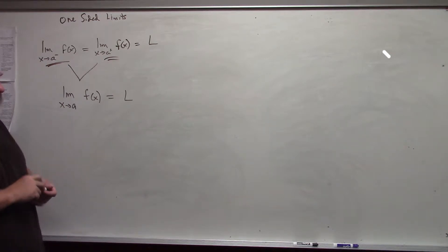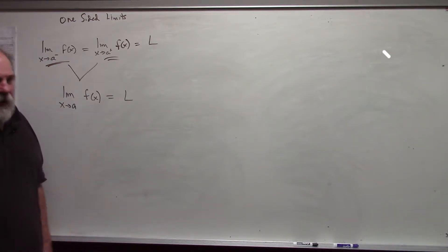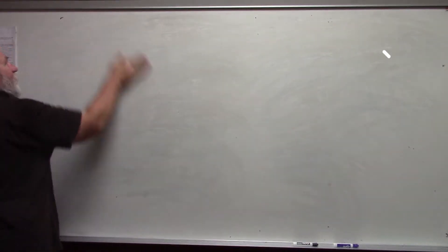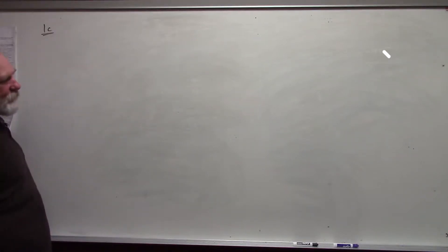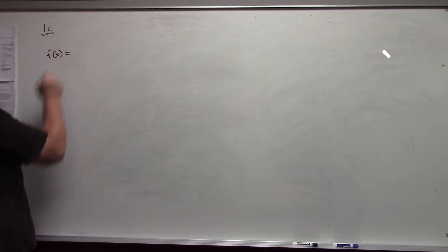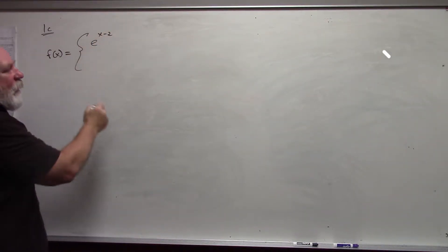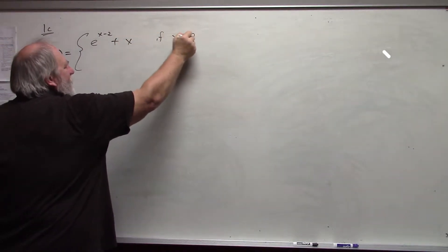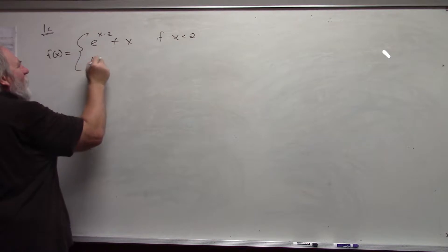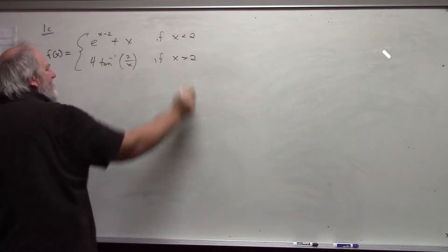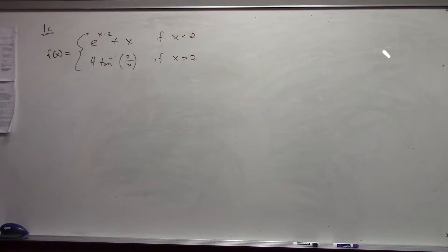I'm going to consider one-sided limits and see what happens in terms of whether the overall limit will exist. Two examples. The first example is problem 1c from the one-sided limits section. It is a piecewise defined function: f(x) equals e to the x minus 2 plus x if x is less than 2, and arctan of 2 over x if x is greater than 2. We'll deal with some more exotic functions — regular polynomials get boring after a while.